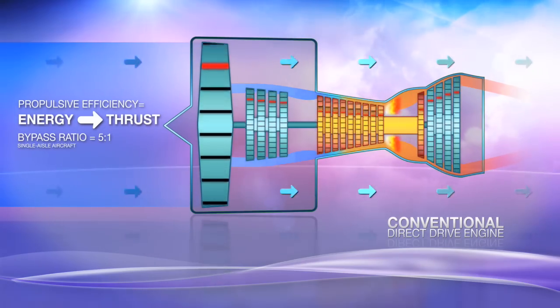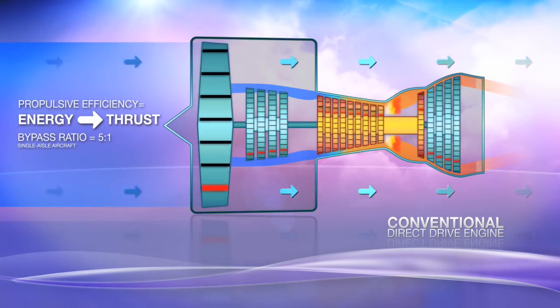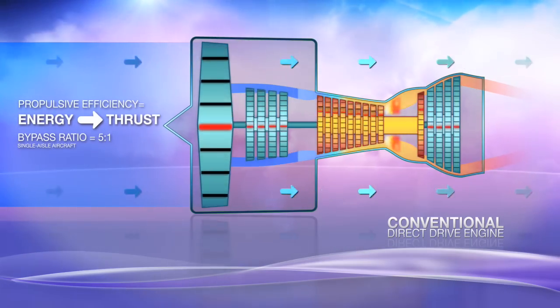The higher the bypass ratio, the better. While a conventional engine runs its fan and turbines at the same speed on a direct drive shaft,